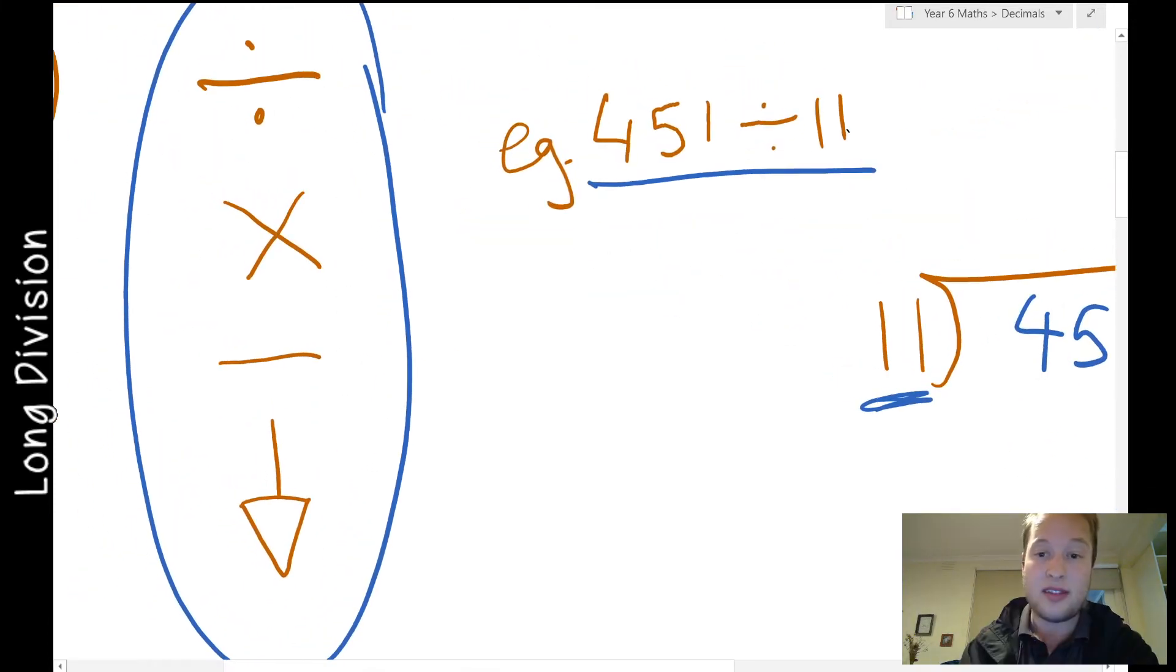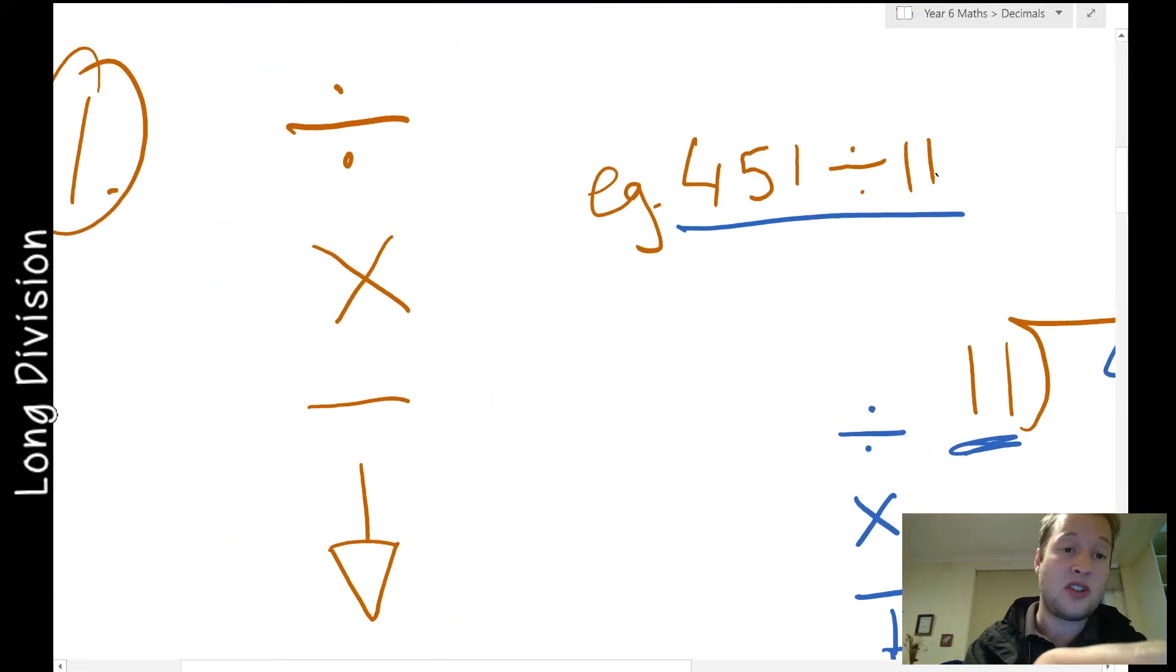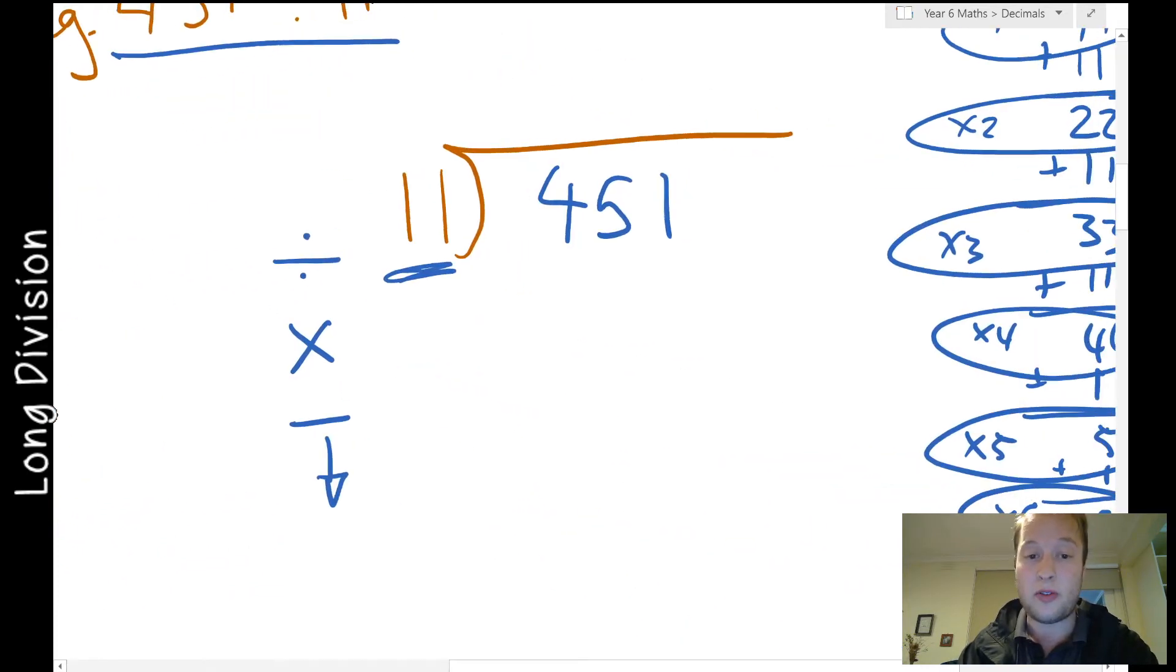Tip number 2. Remember how I said I was going to explain this? I would write this again on the side of my paper: division, times, takeaway and my arrow. Division is my first step, then I need to multiply as my second step, takeaway is my third step, and then bring the next number down as my fourth step.